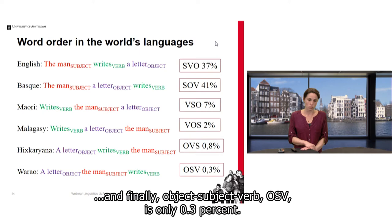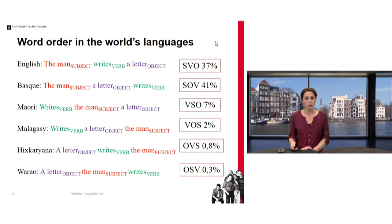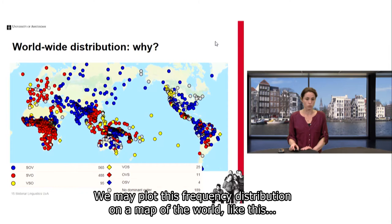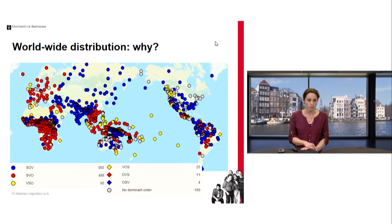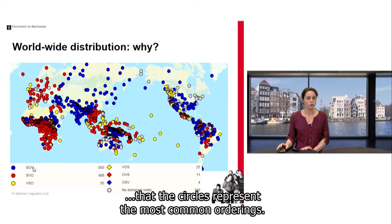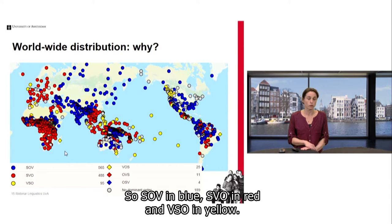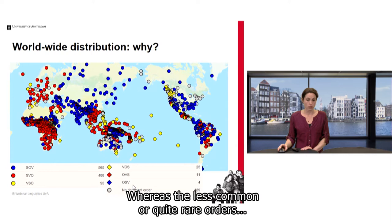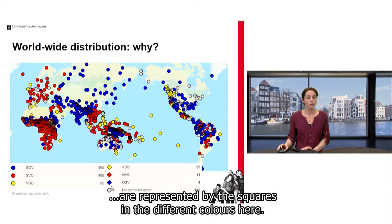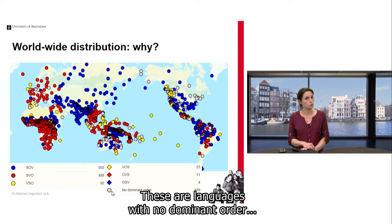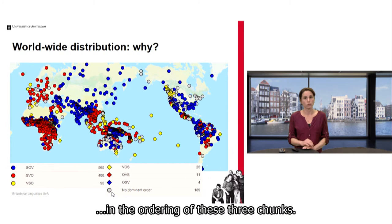We may plot this frequency distribution on a map of the world, where all the dots are individual languages. The circles represent the most common orderings — SOV in blue, SVO in red, and VSO in yellow — whereas the less common or quite rare orders are represented by squares in different colours. There are also many grey circles, representing languages with no dominant order, meaning these languages allow a lot of variation in the ordering of these three chunks — and why this is, you will learn more about when you come study with us.